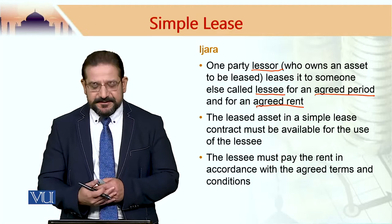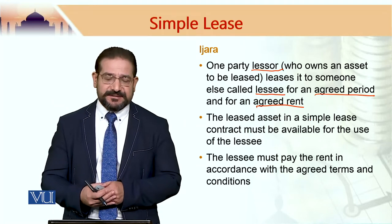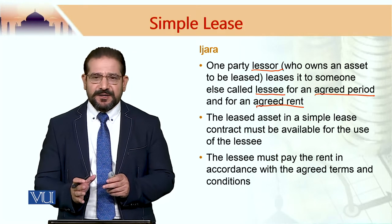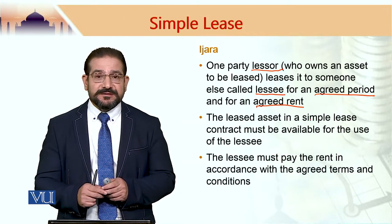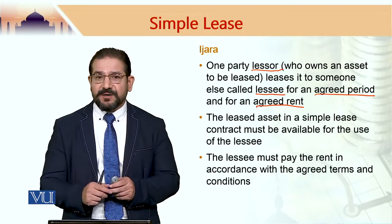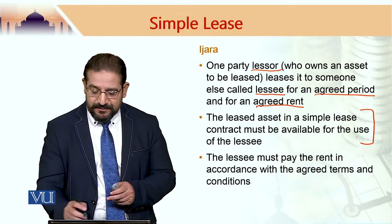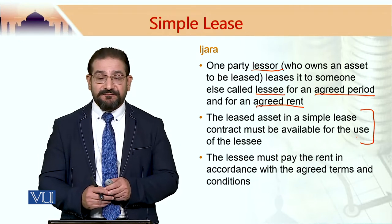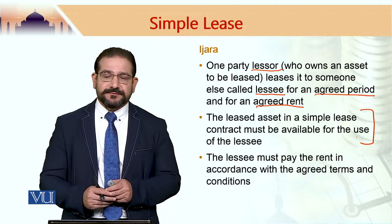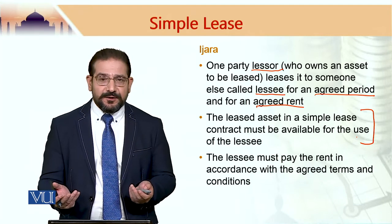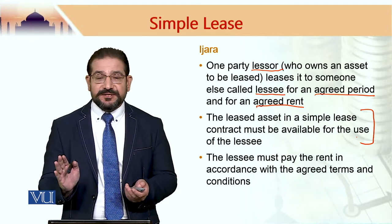The leased asset in a simple lease contract must be available for the use of the Lessee. This is a requirement in a simple lease contract. There is another form of lease contract in which, even if the lease asset is not available at the beginning, it can still work — we will discuss that in due time. In the case of a simple lease, the asset to be leased must be available for the use of the Lessee at least when the lease period starts. If the asset is not available for use, how can it be given on IJARA?